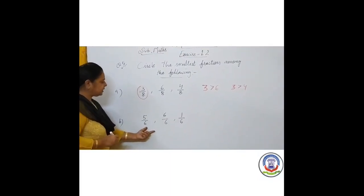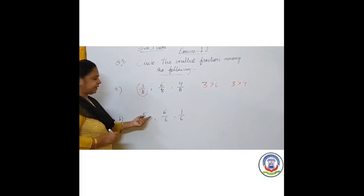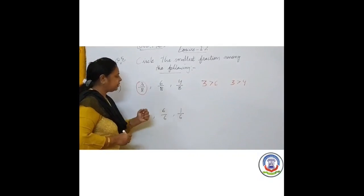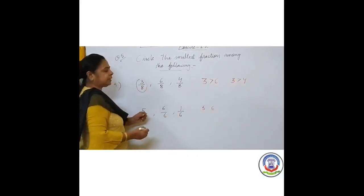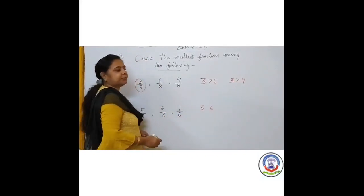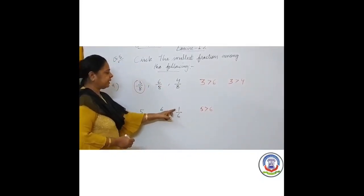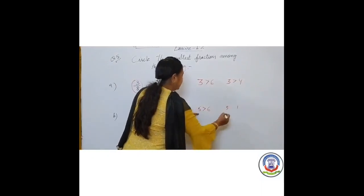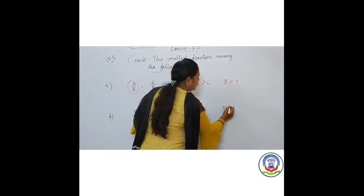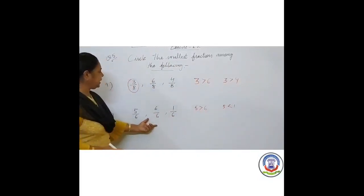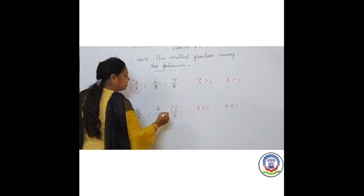Next: 5 upon 6, 6 upon 6, 1 upon 6. The denominators are all 6 — like fractions. Numerators are 5, 6, and 1. Comparing 5 and 6, the smaller number is 5. Then comparing 5 and 1, the smaller number is 1. So the smallest among all three is 1 upon 6; we circle 1 upon 6.